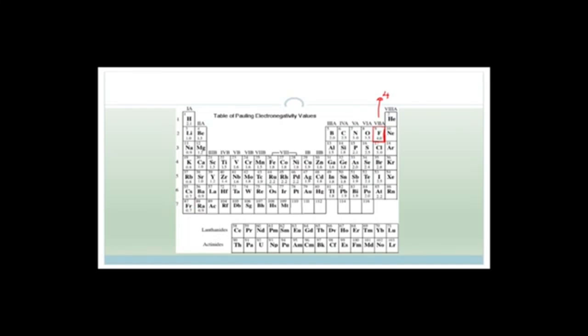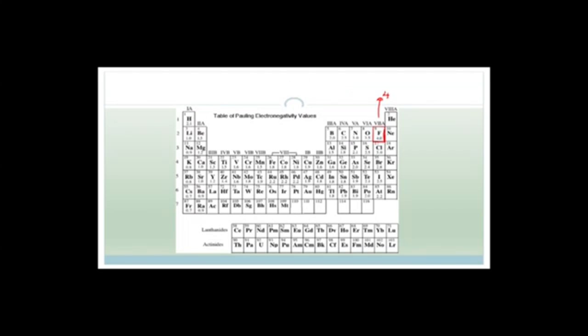So fluorine was designated the value of four, which has the highest electronegativity — the strongest when it comes to attracting electron pairs. As you can see, francium and cesium have the lowest electronegativities, ranging from 0.7 up to four. There is a direction — a trend — as to how the electronegativities work. Pauling decided on fluorine being number four and then rated everything on the periodic table with respect to it.